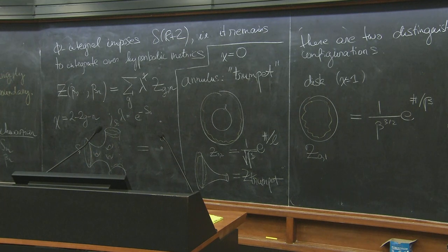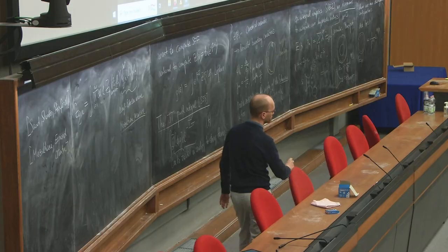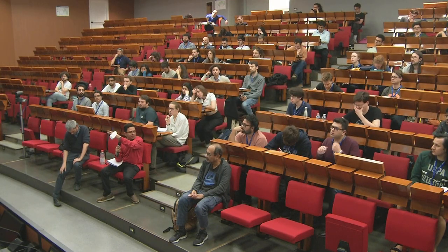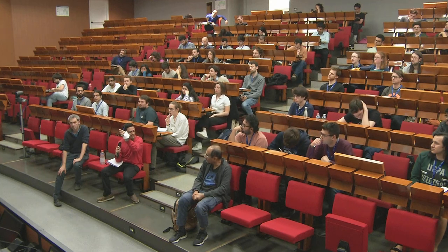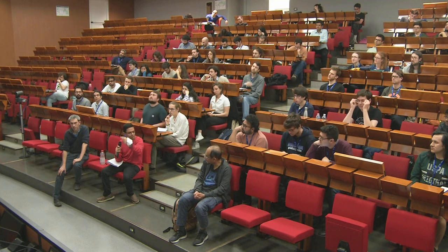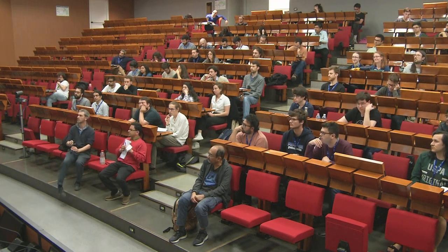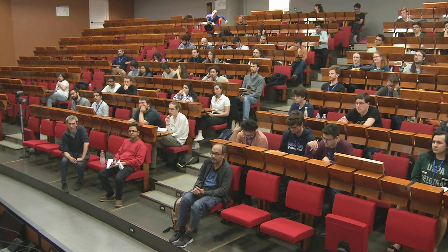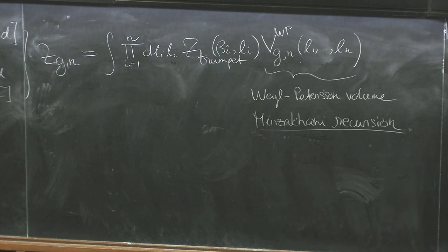To construct the full partition function, one can use building blocks: for each wiggly boundary, one can have a trumpet. To construct a general Riemann surface, one can use a pair of pants decomposition, cutting along circles. For each pair of pants there are three geodesic boundaries over which to integrate. If you want to develop the Mirzakhani recursion, you have to think about different pair of pants decompositions of Riemann surfaces with only geodesic boundaries and genus G.